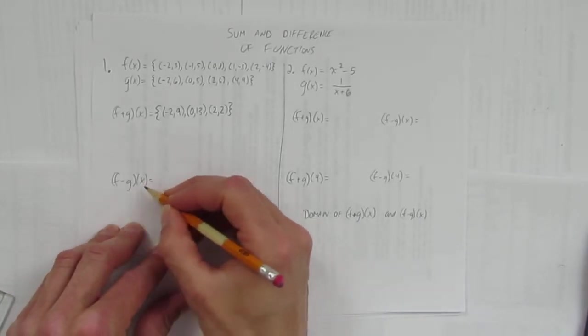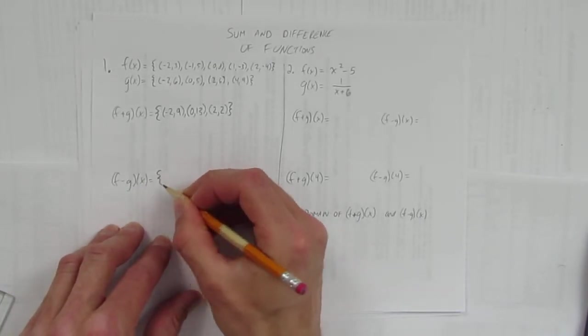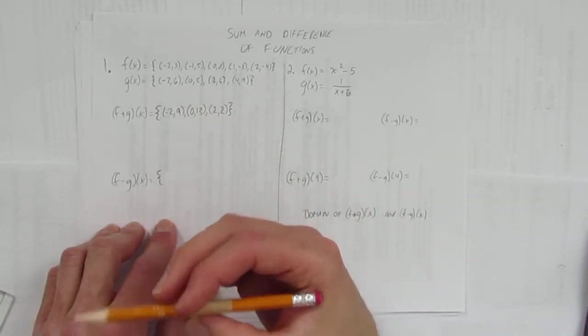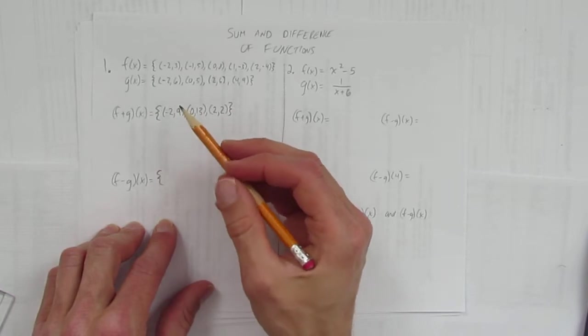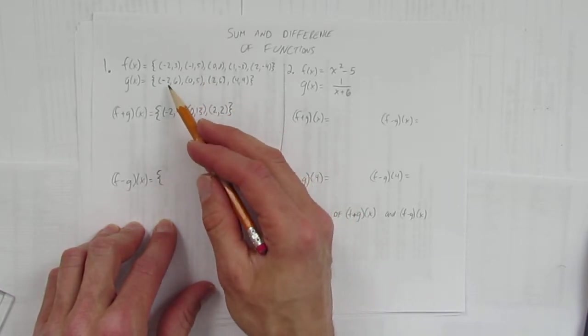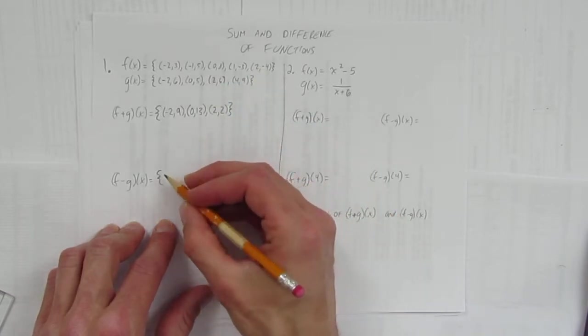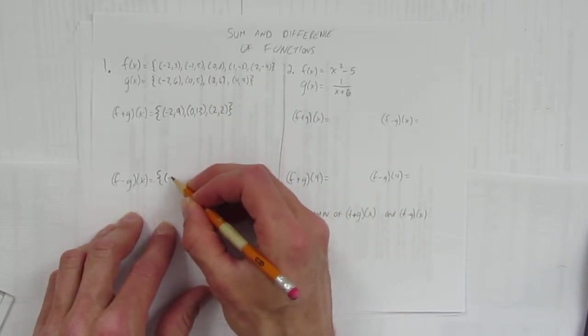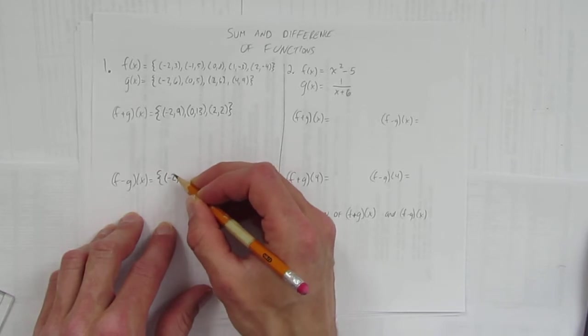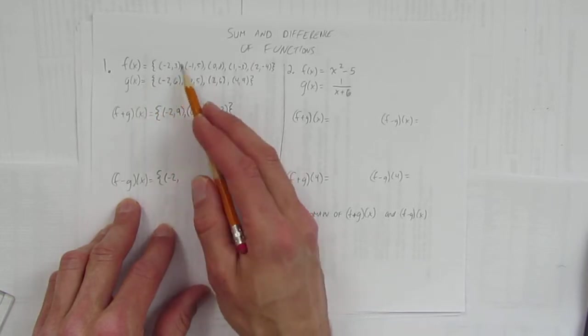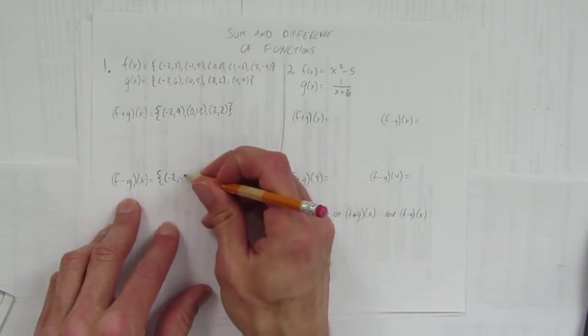What happens when you do (f-g)(x) with points? Same sort of thing. You just look at where they overlap. And by the way, since we've already done (f+g)(x), we know exactly which x values overlap: the negative 2, the 0, and the 2. So those are the ones we're going to subtract. Negative 2 is one of my points for x. What's the y value? f's y value, that's 3. Subtract g. What's 3 take away 6? Negative 3.